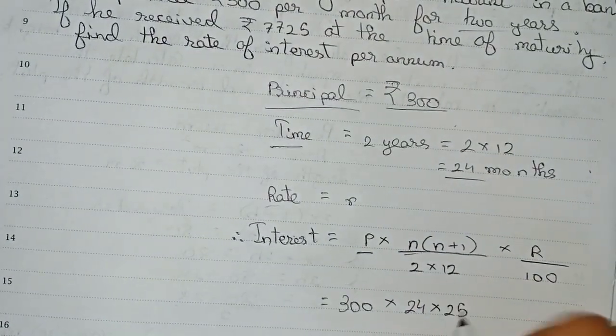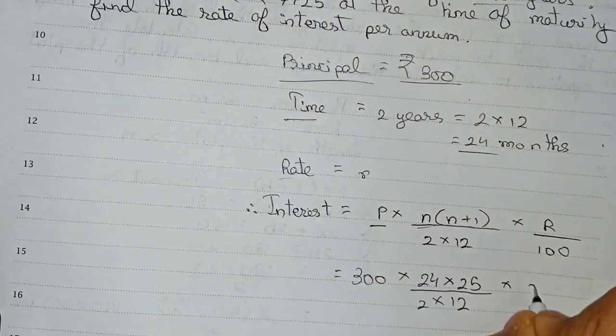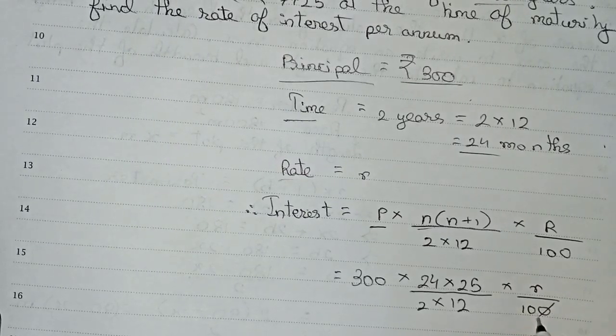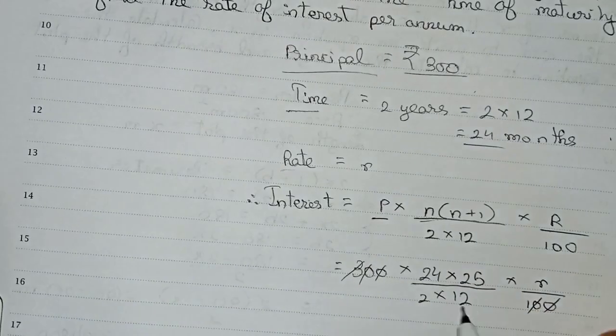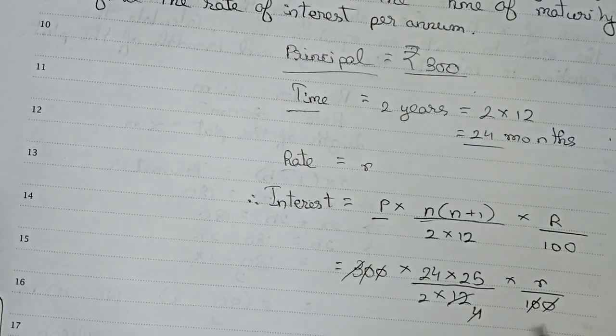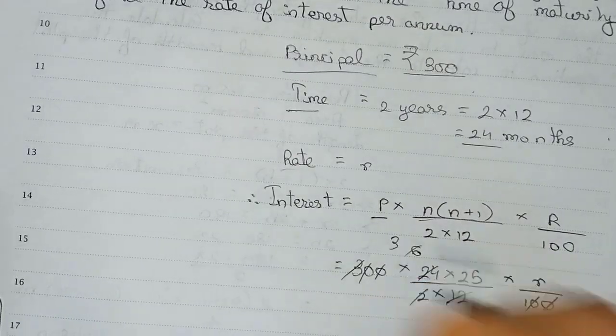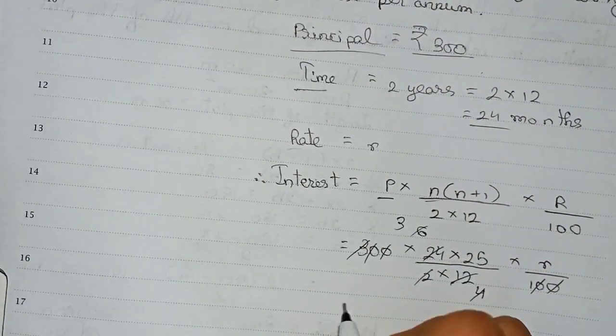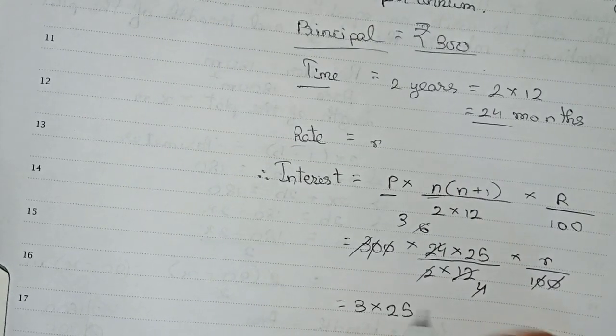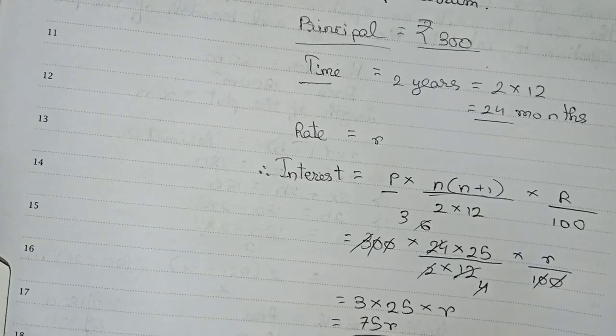So it becomes principal 300 into n, so n is 24, into n plus 1, so 24 plus 1 is 25, by 2 into 12.